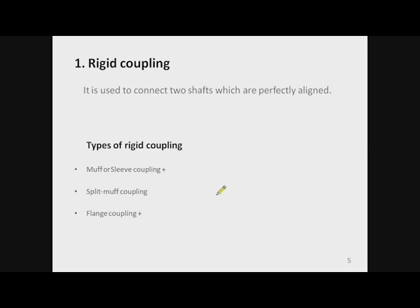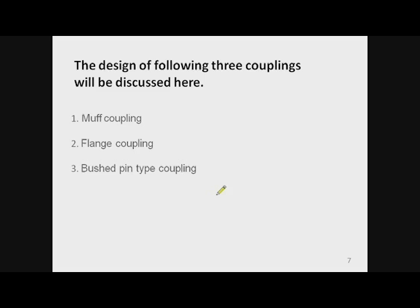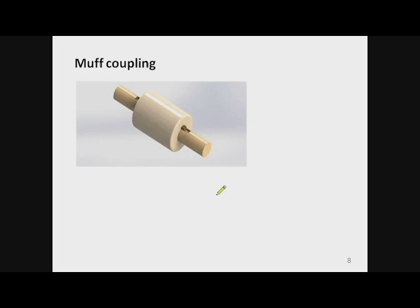Above all, the coupling should be able to transmit power from one shaft to another without any losses. Broadly there are two types of shaft coupling: rigid coupling and flexible coupling. Rigid coupling is used to join shafts whose axes are perfectly aligned; its types include muff coupling, split muff coupling, and flange coupling. Flexible coupling is used where the two shaft axes have lateral, axial, or angular misalignment. In this video we will discuss the design of three couplings: muff coupling, flange coupling, and bush pin type coupling.